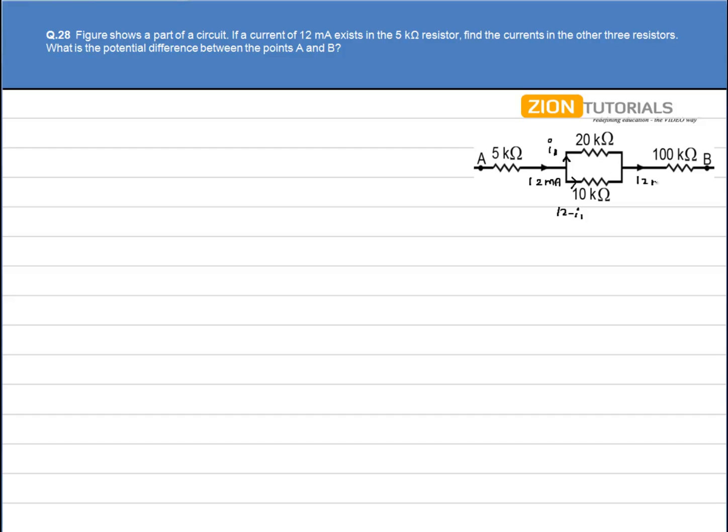So we get 12mA current back in the 100kΩ resistor. We have to calculate the current in the 20kΩ and 10kΩ resistors. Obviously, the potential difference across 20kΩ and 10kΩ will be the same as both are in parallel combination.